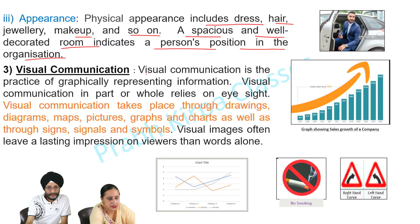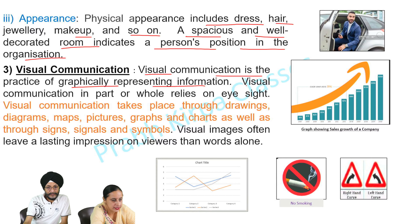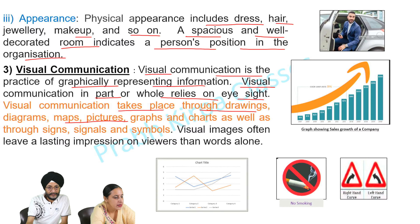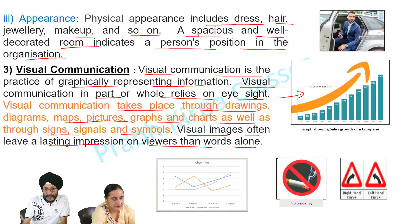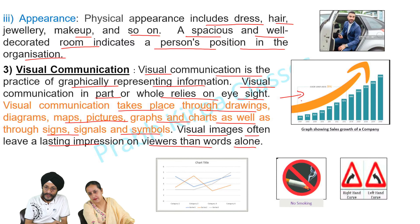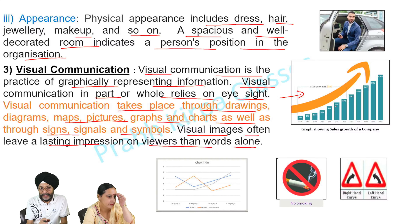Third, Visual Communication. Visual communication is the practice of graphically representing information. It relies in part or whole on eyesight and takes place through drawings, diagrams, maps, pictures, graphs and charts, as well as through signs, signals, and symbols. Visual images often leave a lasting impression on viewers than words alone. In this picture, you can see a graph showing the sales growth of a company — that is a visual method of communication.